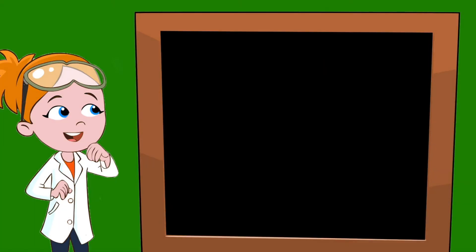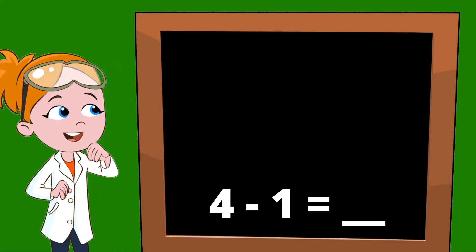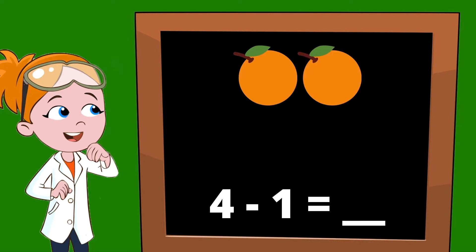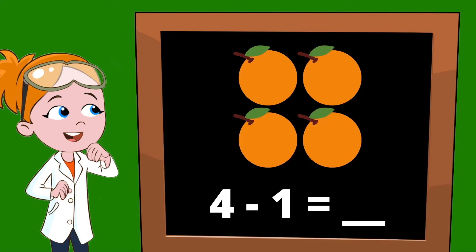Let's start out with a simple equation. How about 4 minus 1? Well, let's turn it into something we can see. Let's use oranges. The first number in our equation is 4, so that means we started with 4 oranges. 1, 2, 3, 4. 4 oranges.